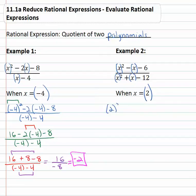This becomes 2 squared minus x which is now a 2 minus 6 over x squared which is 2 squared plus x which is 2 minus 12.